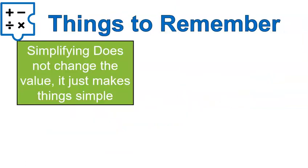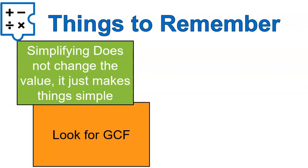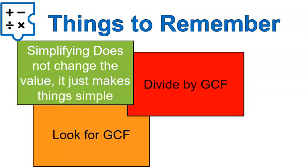All right. A couple of things to remember. Simplifying does not change the value. It just makes things simple. Look for the greatest common factor. Divide by the greatest common factor. That's how you simplify a ratio. I hope that lesson was helpful for you. Make sure to take time to do all the questions in the worksheet and look at the answer key to check your work. Then go ahead and take that quiz. Good luck on the quiz and have a wonderful day.